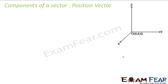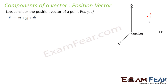Now if I have some position vector P with coordinates x, y and z, this vector P is denoted by r. This particular position vector can be written as r vector, which is nothing but xi + yj + zk, where x, y and z are the components of this vector on the x, y and z axes.